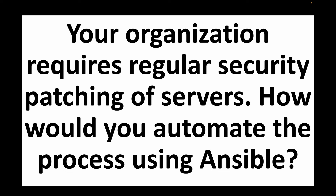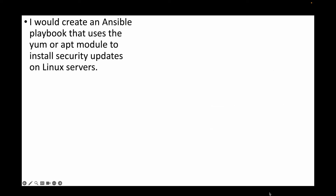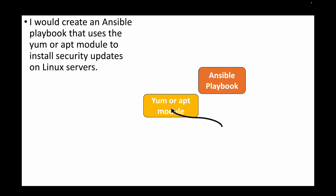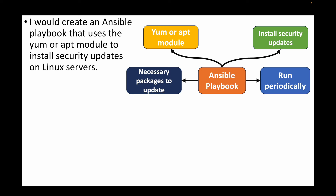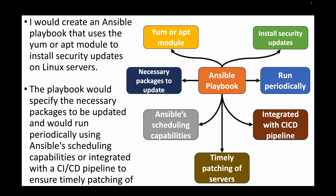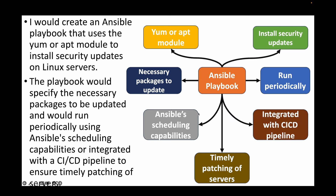The next question: your organization requires regular security patching of servers — how would you automate this using Ansible? We create an Ansible playbook that uses either the apt or yum modules to apply security updates on Linux machines. The playbook lists all necessary packages to be updated and runs periodically using Ansible's scheduling capabilities or integrated with CI/CD pipelines to ensure timely patching.